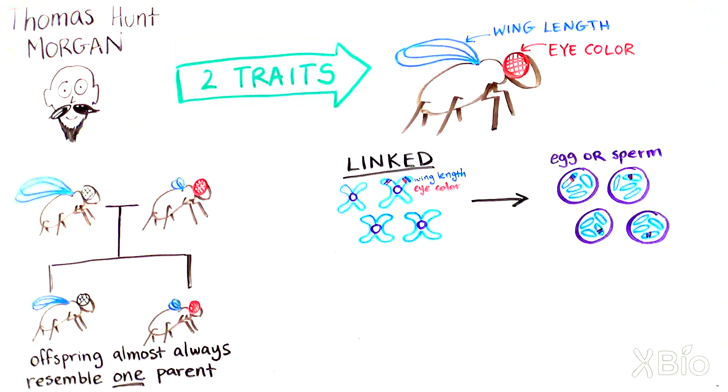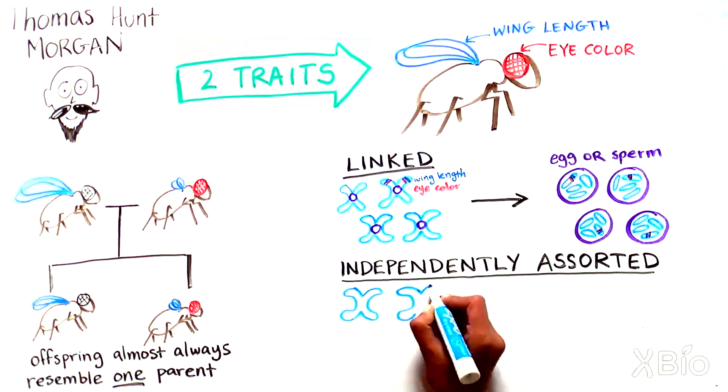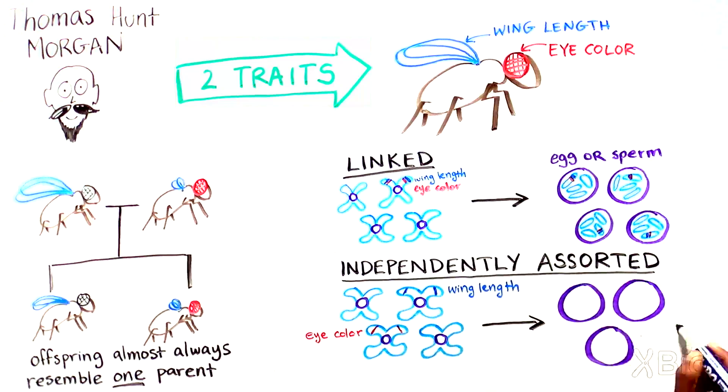In contrast, if they were on different chromosomes, then the genes and their traits should sort independently, as described by Mendel.